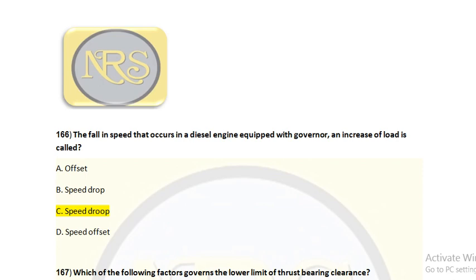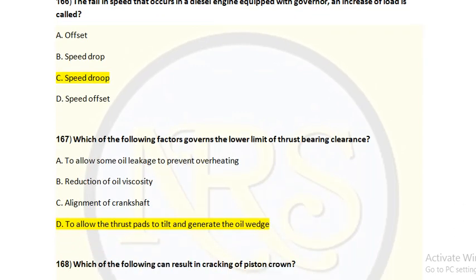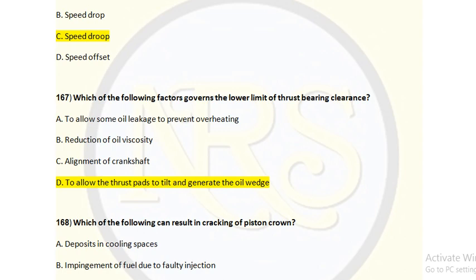For question number 166 the correct answer is speed droop — this process is called speed droop. Question number 167. Which of the following factors governs the lower limit of the thrust bearing clearance? Option A, to allow some oil leakage to prevent overheating; option B, reduction of oil viscosity; option C, alignment of crankshaft; option D, to allow the thrust pad to tilt and generate the oil film.